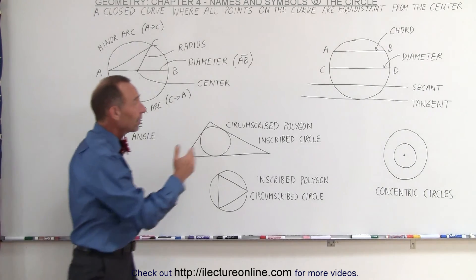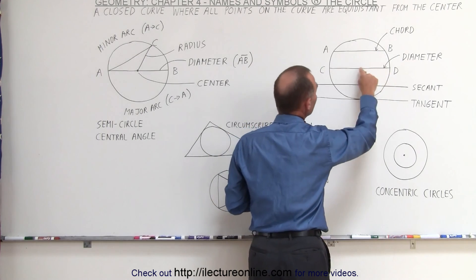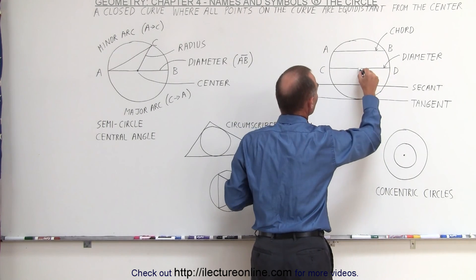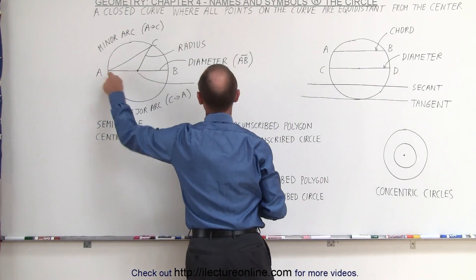Now when we go over to the right side of the board here, notice we've drawn some lines again. We've drawn the line from C to D. It goes to the center point right here. If this is a center, then this is also called the diameter. That's the same as going from A to B over here.